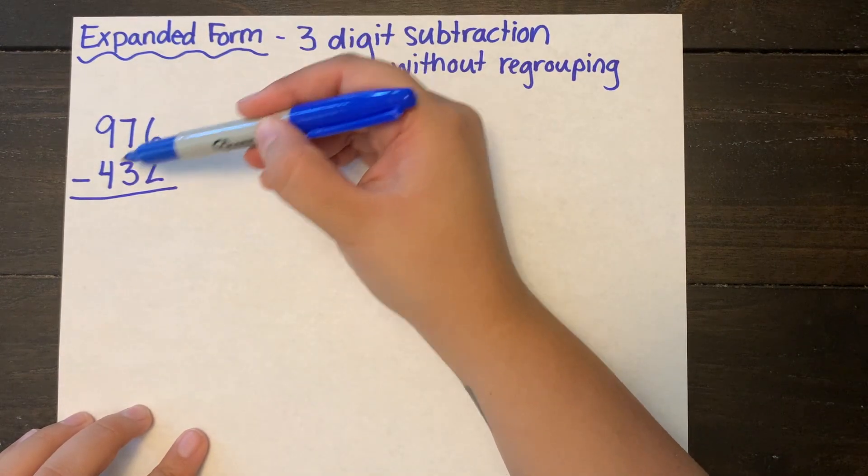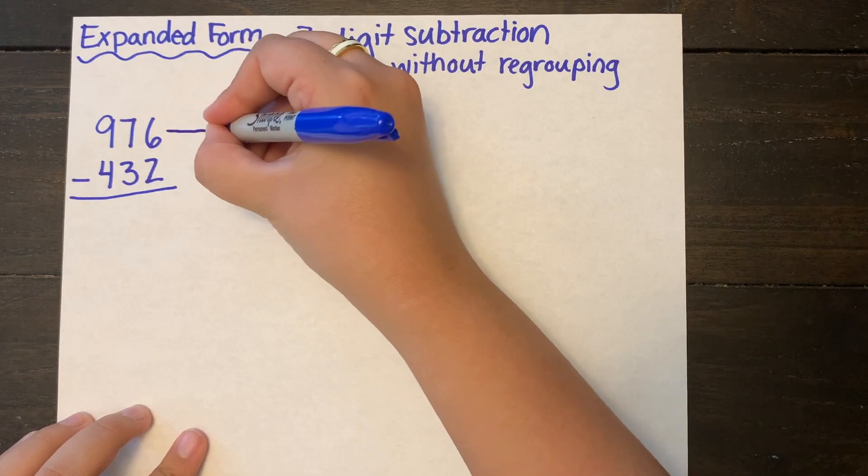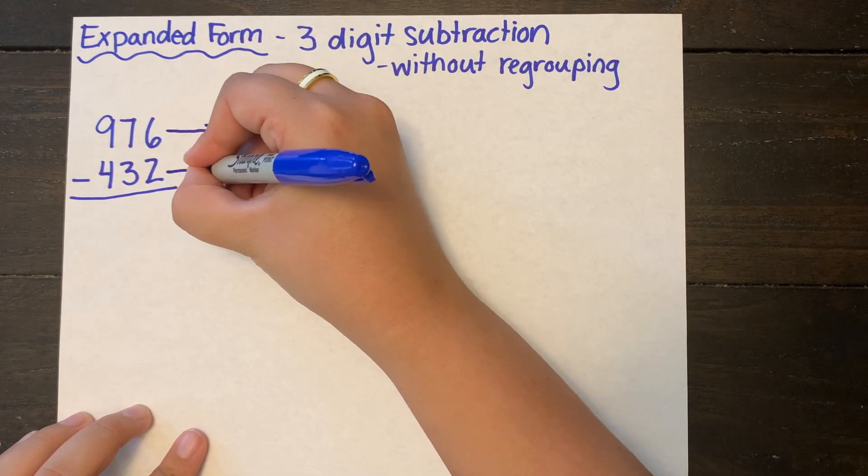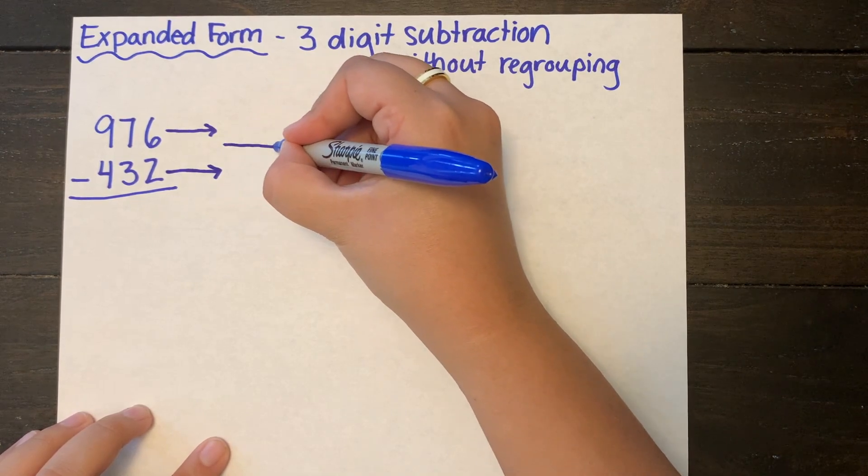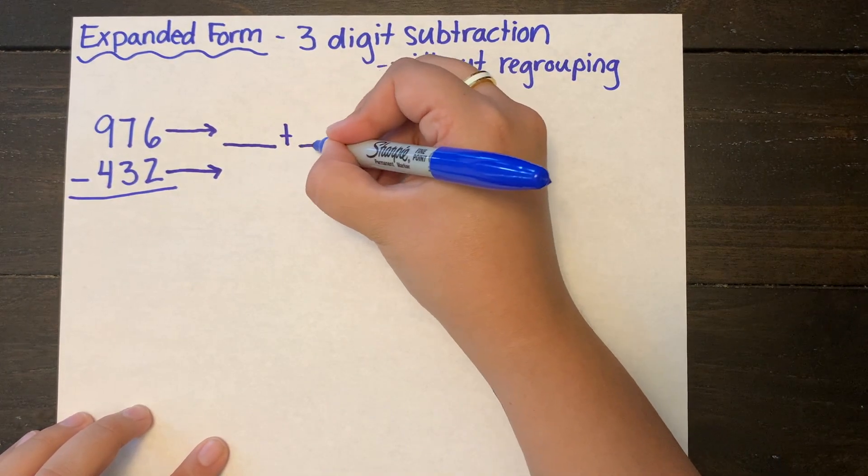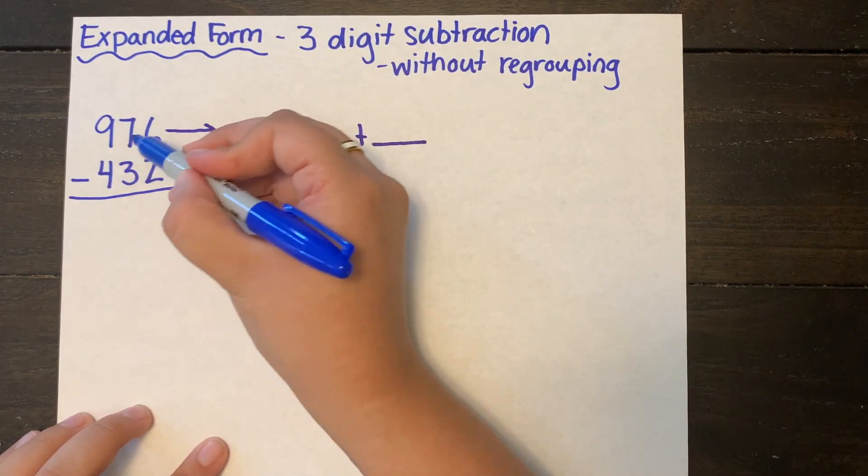Today we're going to be taking away 432 from 976. I'm drawing out my arrows to show where I'm going to expand those numbers out, and because it is three-digit I am writing three lines to represent each place value in the number.